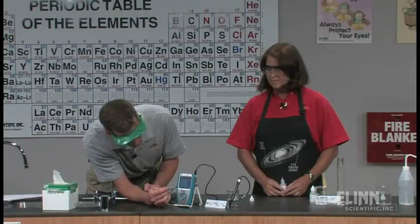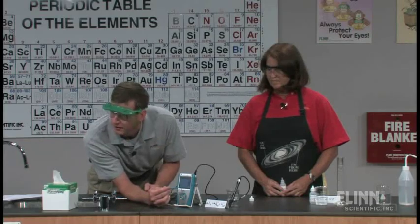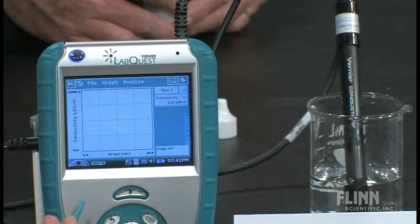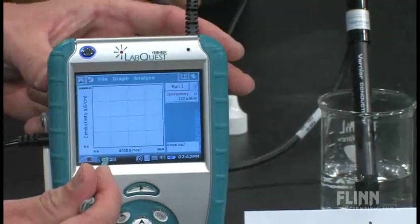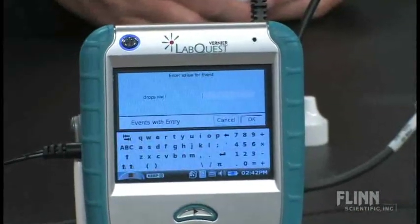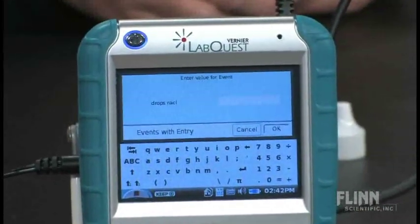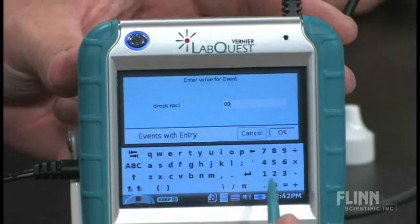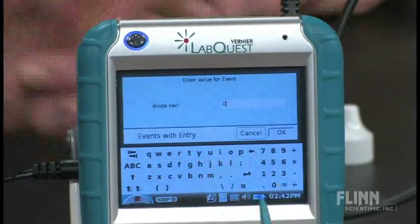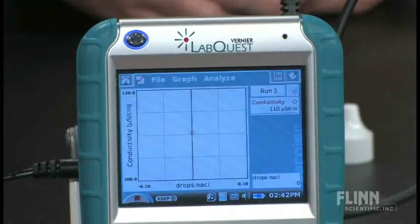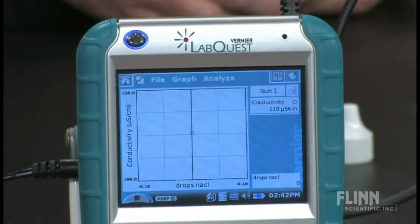As I start the reaction, a keep button comes up here and allows me to keep whatever the probe is reading at this particular point in time. I'm going to press the keep button. That's going to be my zero mark. And if you'll notice, a blank comes up there that allows me to put in that I have put in zero drops of sodium chloride. I can click OK and it gives me my first data point.